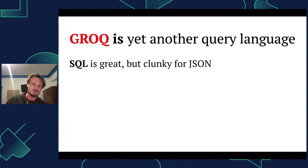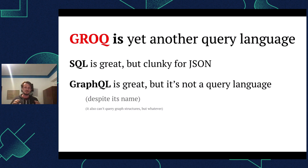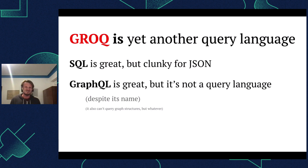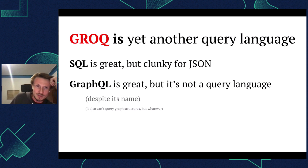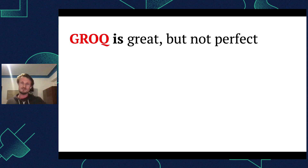GraphQL is also great, but it's honestly not really a query language in the traditional sense. The whole purpose of a query language is that you give all the flexibility to the developer to get the exact data they need, but GraphQL is very limited in that sense. Even though they call themselves a query language, it's not really one. All of this caused us to realize we needed another thing, and that became GROQ. We think GROQ is pretty good and solves some real needs, as you saw in the query before you can do quite complicated stuff.